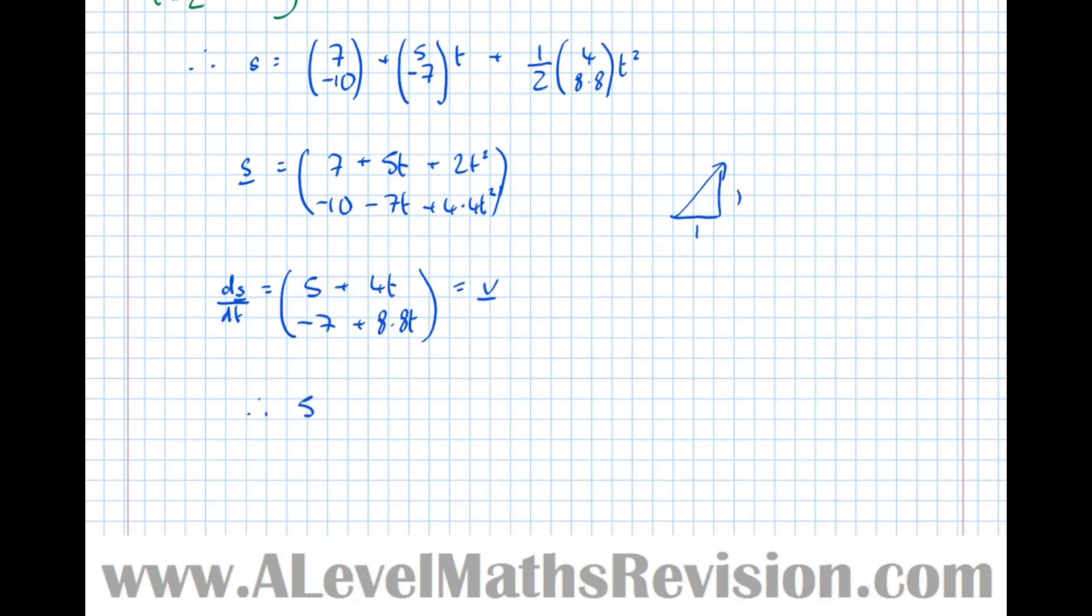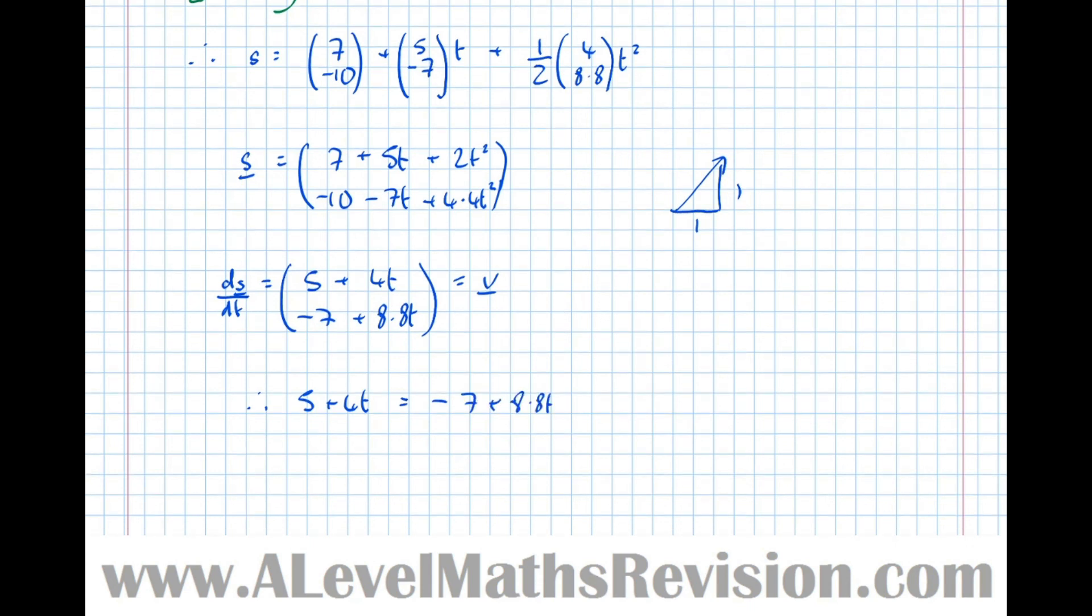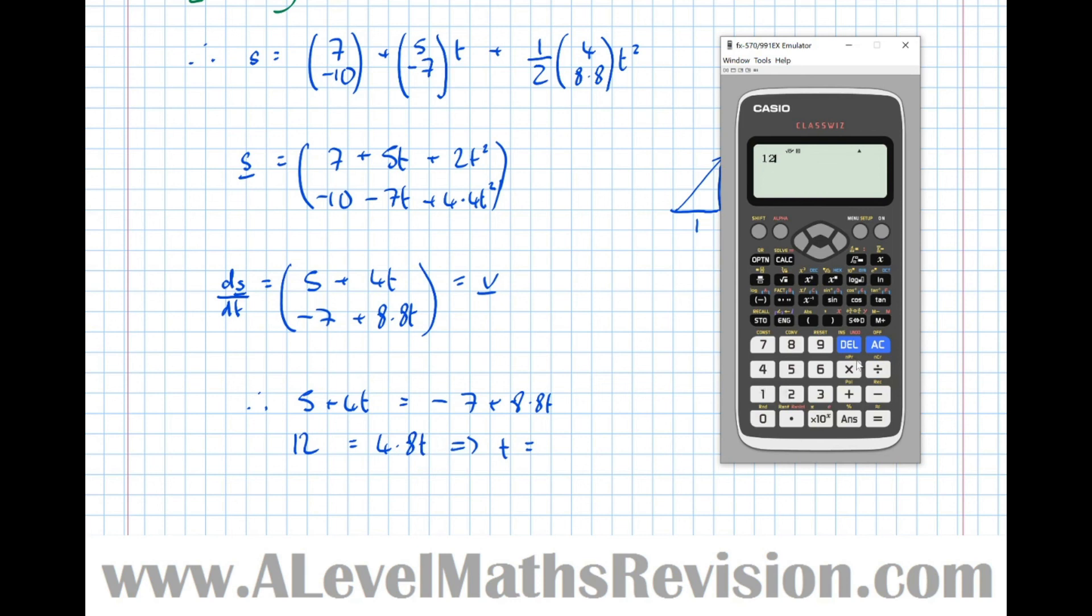Therefore, 5 plus 4T equals minus 7 plus 8.8T. Solving that equation, we get 12 equals 4.8T, which means that T equals 12 divided by 4.8, which is 2.5 seconds.